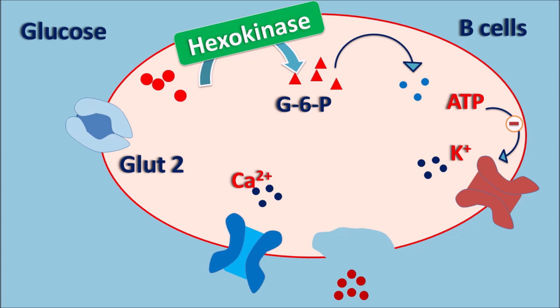Sulfonylureas have a different binding site associated with the ATP-sensitive potassium channels — these are called sulfonylurea receptors, which are synthetic receptors on which only synthetic molecules like sulfonylureas can act. These drug molecules bind to the sulfonylurea receptors, thereby inhibiting the ATP-sensitive potassium channels — acting just like ATP. This increases depolarization of the beta cells, resulting in increased insulin release. That is why sulfonylureas are beta cell-dependent; only when beta cells are intact can they increase insulin release and control glucose levels.